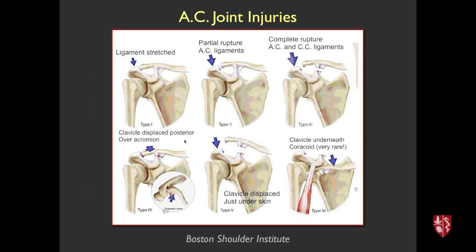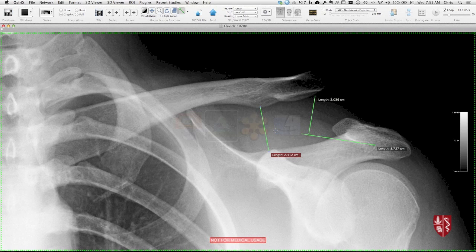I won't dwell on the higher grades. Type four is where the clavicle is actually more posteriorly displaced relative to the acromion, and that can be difficult to detect unless you look carefully at an axillary view where the clavicle is posterior to the acromion. Type five you can think of as like a higher grade three, but what happens here is that the clavicle actually pokes through the trapezius muscle and is just subcutaneous — so that's more of an added muscle injury. And then type six, which I've never seen, is where the clavicle somehow figures out how to get underneath the coracoid process.